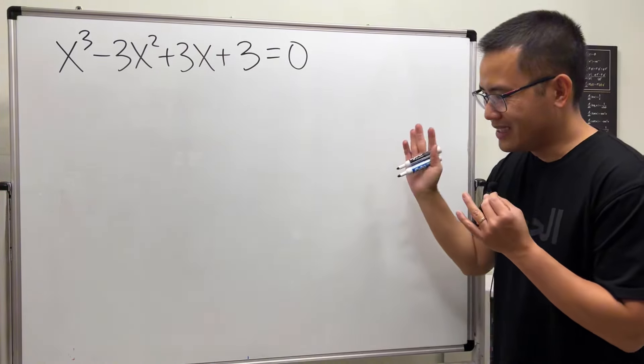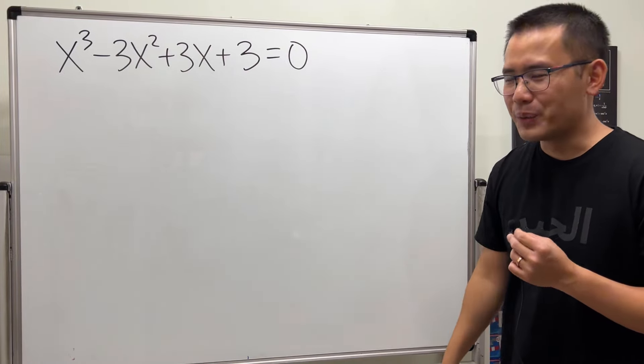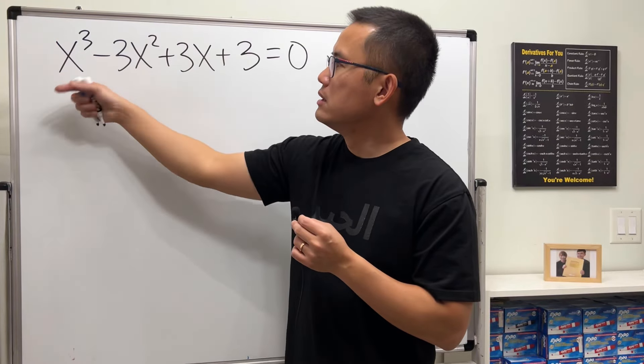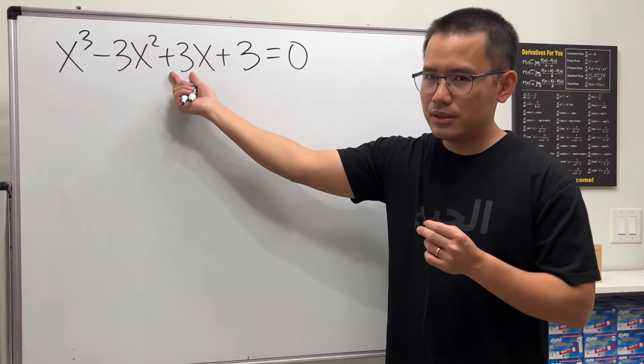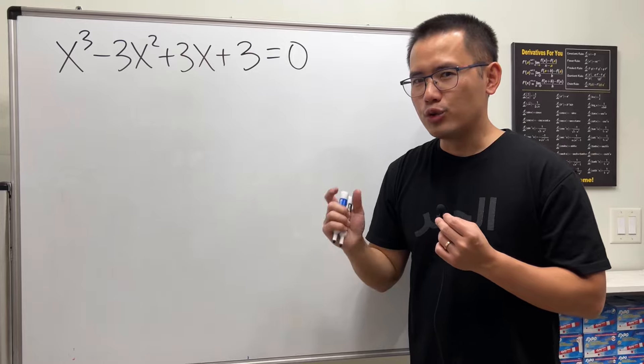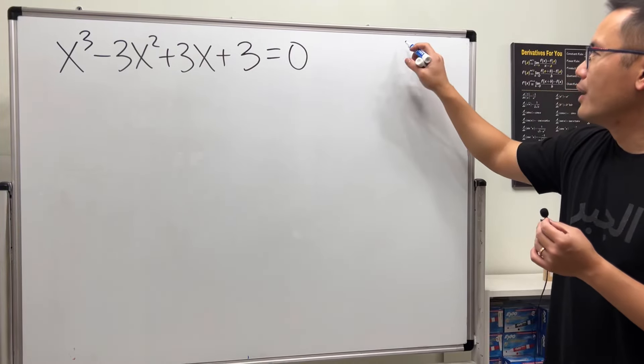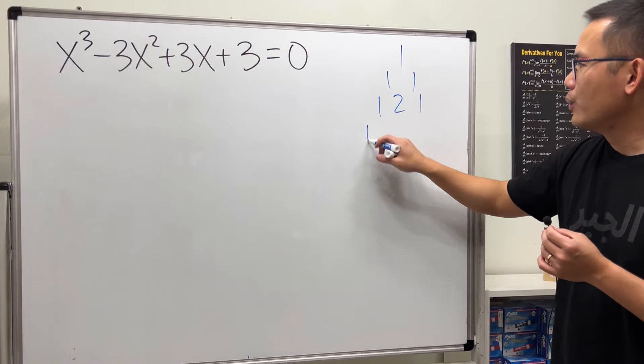I'm going to show you the omega way to do it. First though, notice we have 1, negative 3, positive 3. This right here should remind you of Pascal's triangle. Have a look: 1, 1, 1, 1, 2, 1, 1, 3, 3, 1.